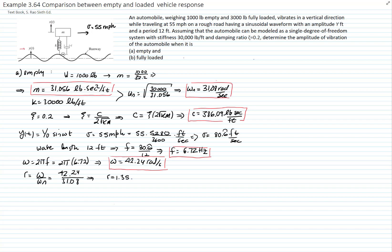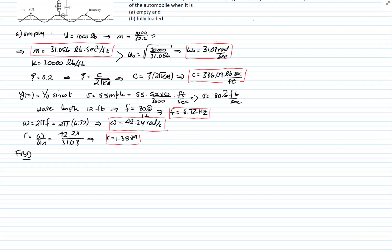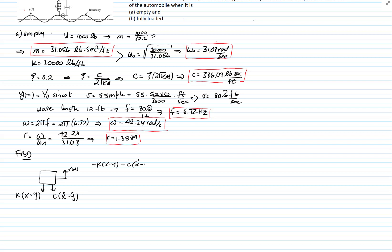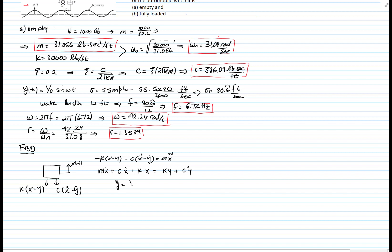Now that we have characterized our system, let's draw the free body diagram to get the equation of motion. For the mass, our variable is measured from the equilibrium position, so we don't draw the weight. We have the spring force and the damper force, both written in terms of relative displacement: the spring gives k(x − y) and the damper gives c(ẋ − ẏ). Summing forces in the y-direction gives the equation of motion: mẍ + cẋ + kx = cẏ + ky.